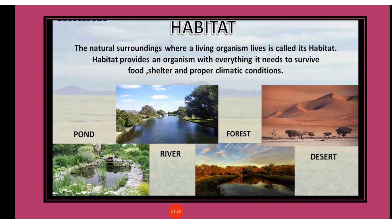Habitats are grouped mainly into two types. First is Aquatic and the second one is Terrestrial. The habitat of plants and animals that live in water is known as Aquatic Habitat. Examples include ponds, lakes, rivers and ocean. It could be freshwater, like a river or pond, or marine water, that is the sea.